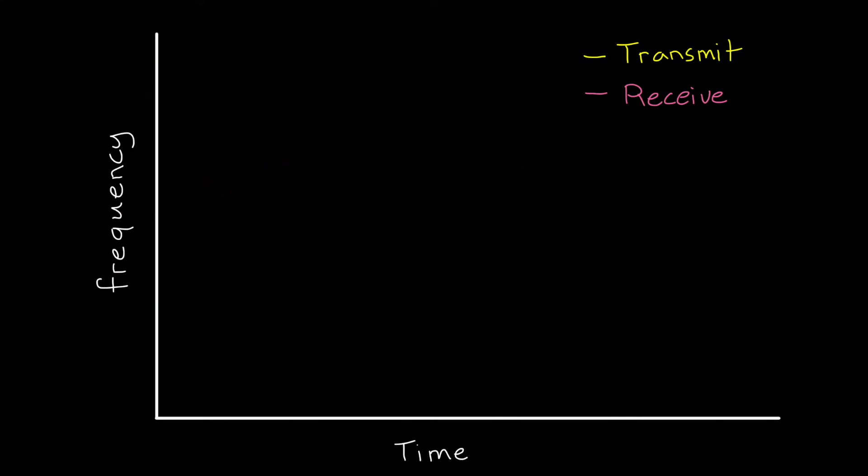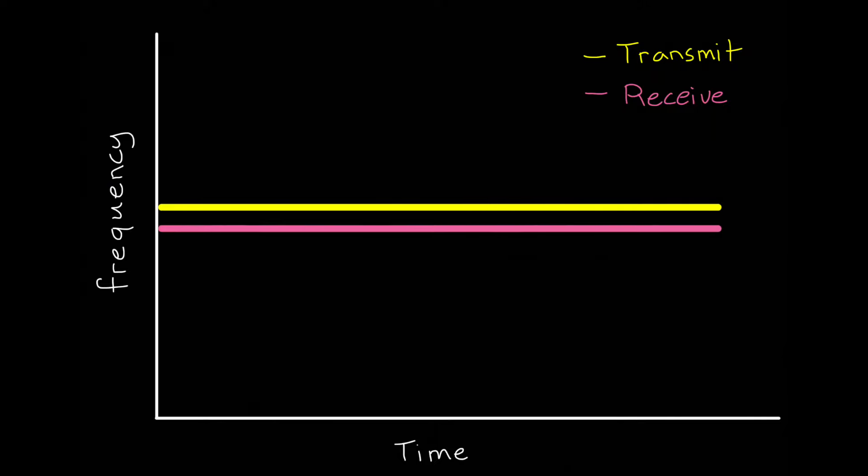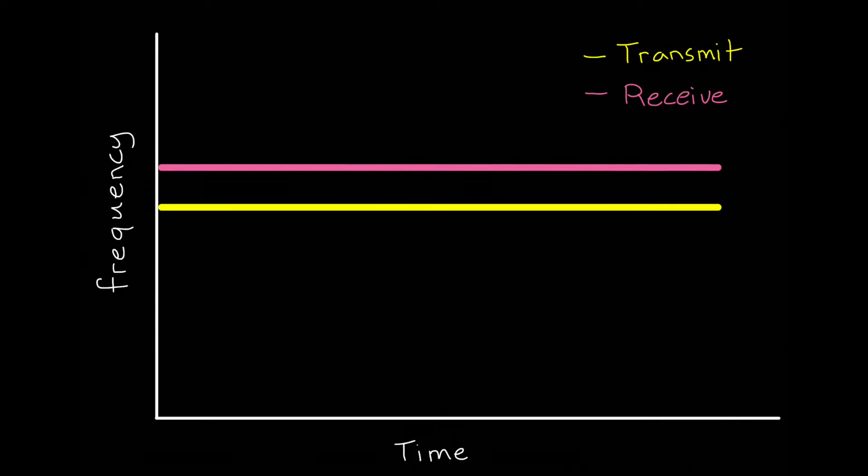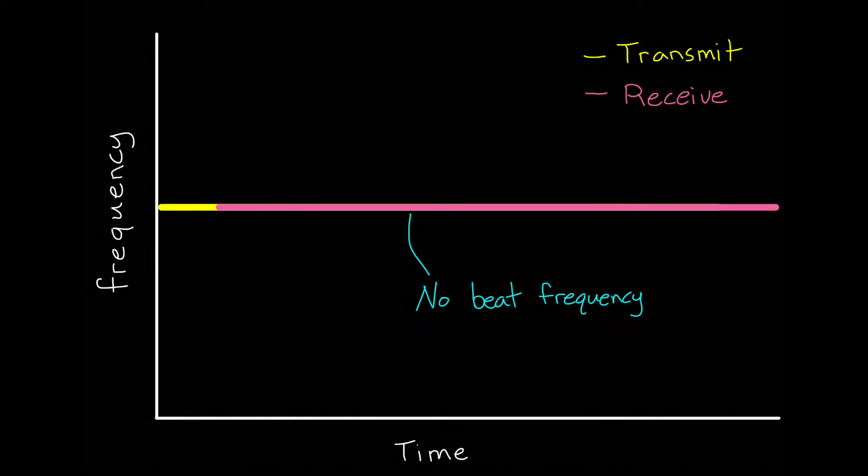We can see this more cleanly if we plot the frequency of the transmit signal as a function of time. With a fixed frequency, this is just a horizontal line. The Doppler shift lowers the frequency of the received signal if the object is moving away from the radar and raises the frequency if it's moving towards the radar. We already know we can detect this beat frequency and direction by mixing the two IQ signals. But for a stationary object at a distance, the received signal is just shifted horizontally. Therefore, there is no beat frequency between the transmit and receive signals. So to get around this problem, we can modulate the frequency.